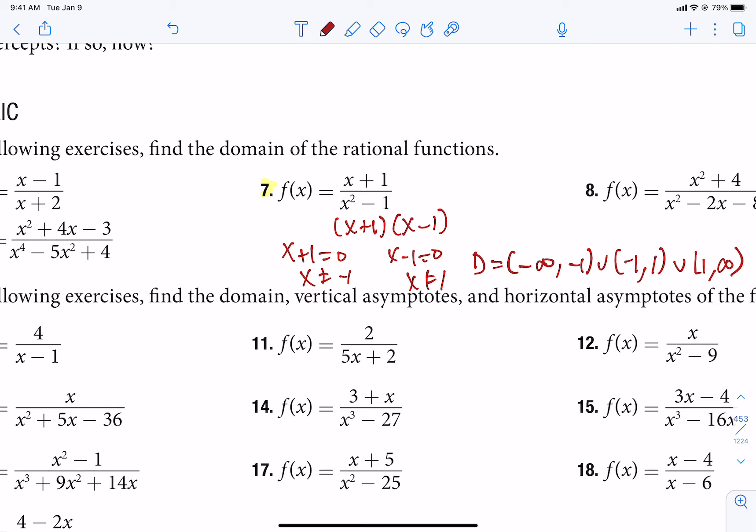So our domain goes from negative infinity to negative 1, negative 1 to 1, and 1 to infinity. So if we were to look at this graph, we should see three pieces. There would be a hole at negative 1 and an asymptote at positive 1. So that's number 7.